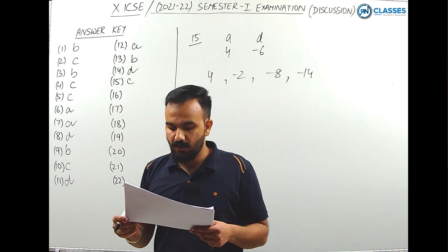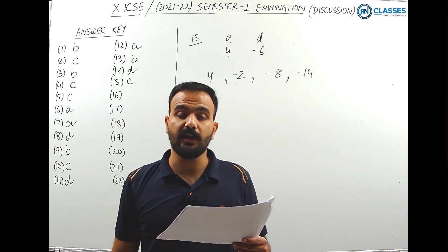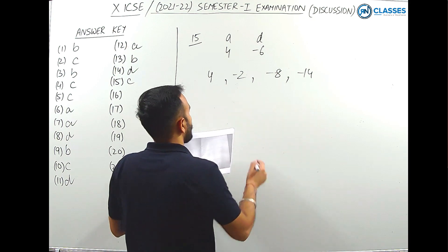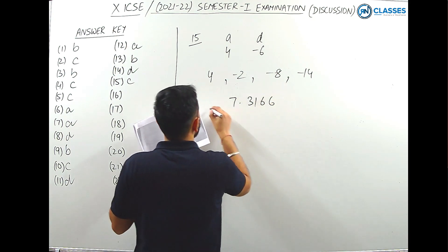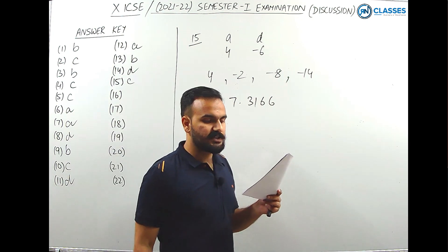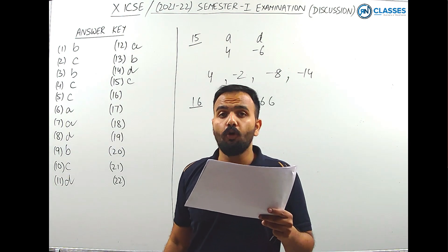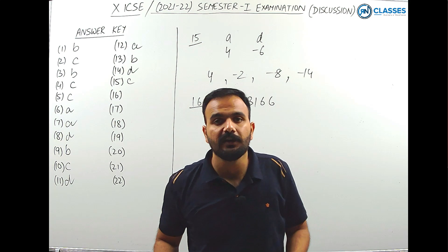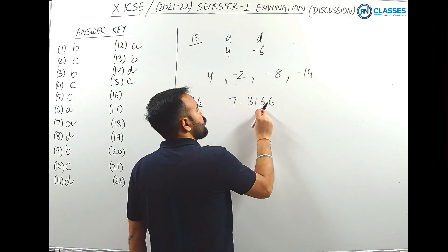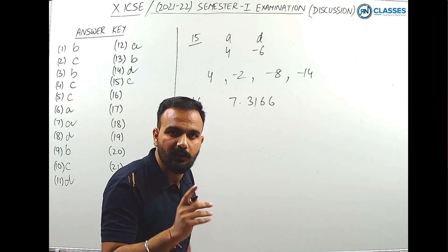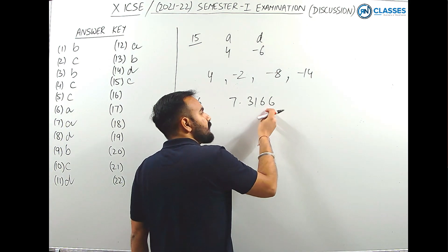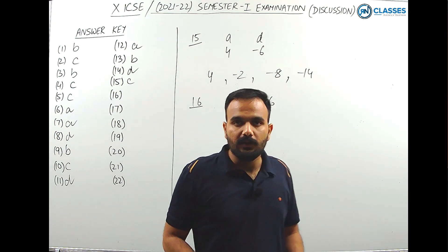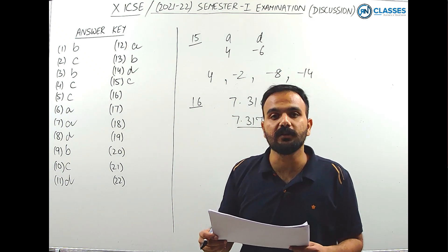Question 16: one root of the quadratic equation x² - 8x + 5 = 0 is 7.3166. Find the root correct to 4 significant figures. The number 7.3166 has 5 significant figures; rounding to 4 significant figures means keeping 3 decimal places, giving 7.317. Option B is the correct answer.